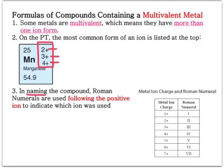If you remember Roman numerals, here are the Roman numerals listed for each ion charge. Positive one is given the Roman numeral I. Positive two will be II. Five is a V, so four is one before the five (IV), and six is one after the five (VI). You should become familiar with what the symbols for those Roman numerals are.